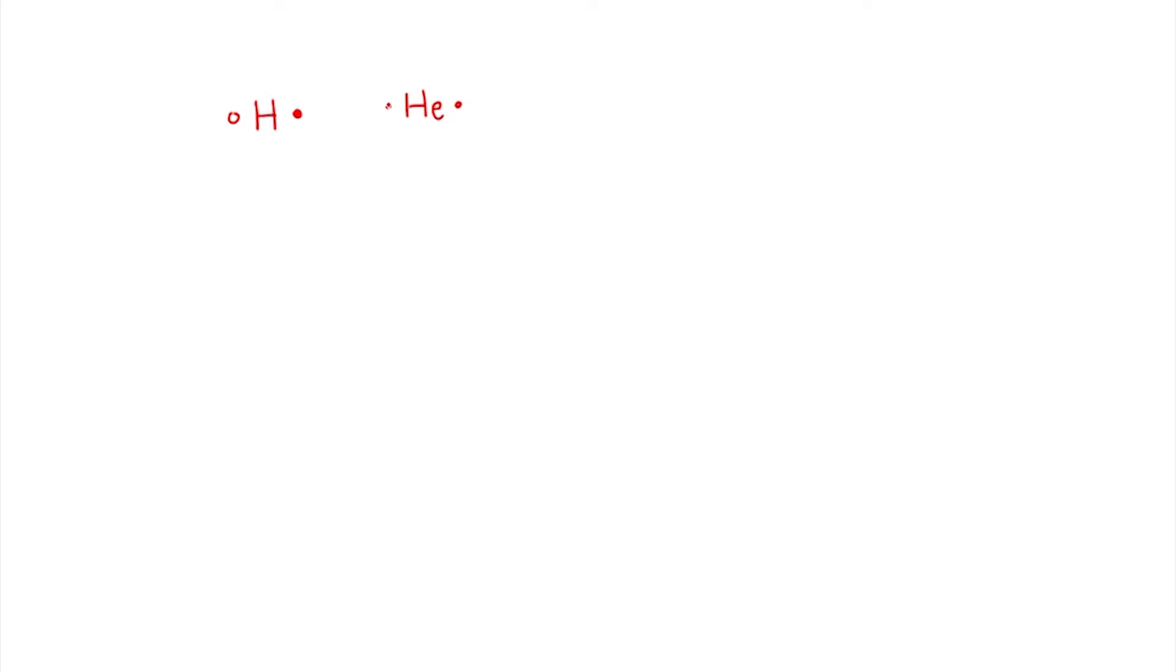If it were helium, on the other hand, then there would be two electrons in orbit and the outer shell would be completely full. One of these electrons would be a spin up electron and one would be a spin down electron.